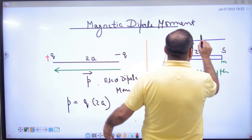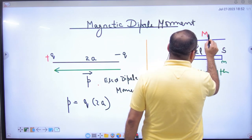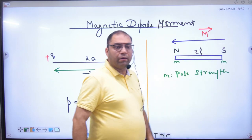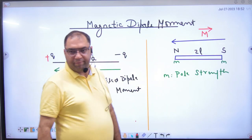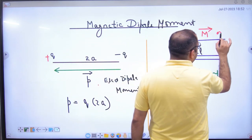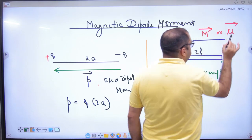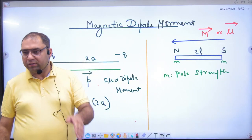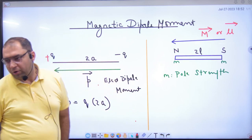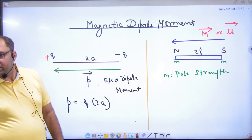Electric dipole moment we have represented from P. We will represent it from the M, capital M. In many books, it has mu vector. Capital M or mu vector.